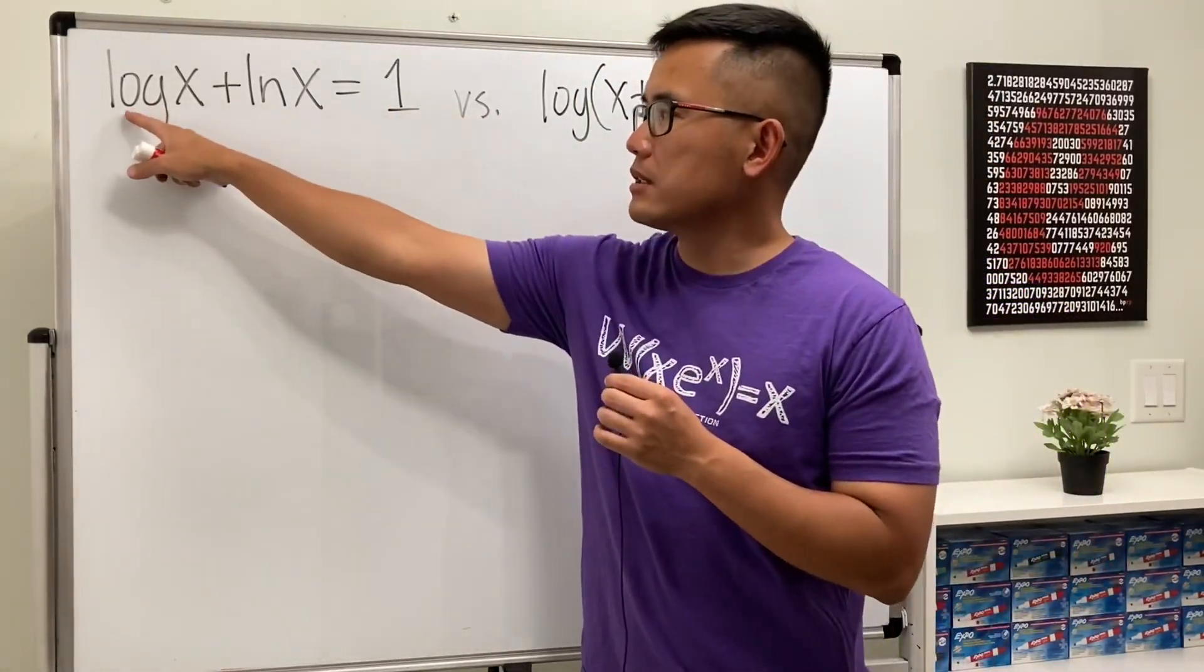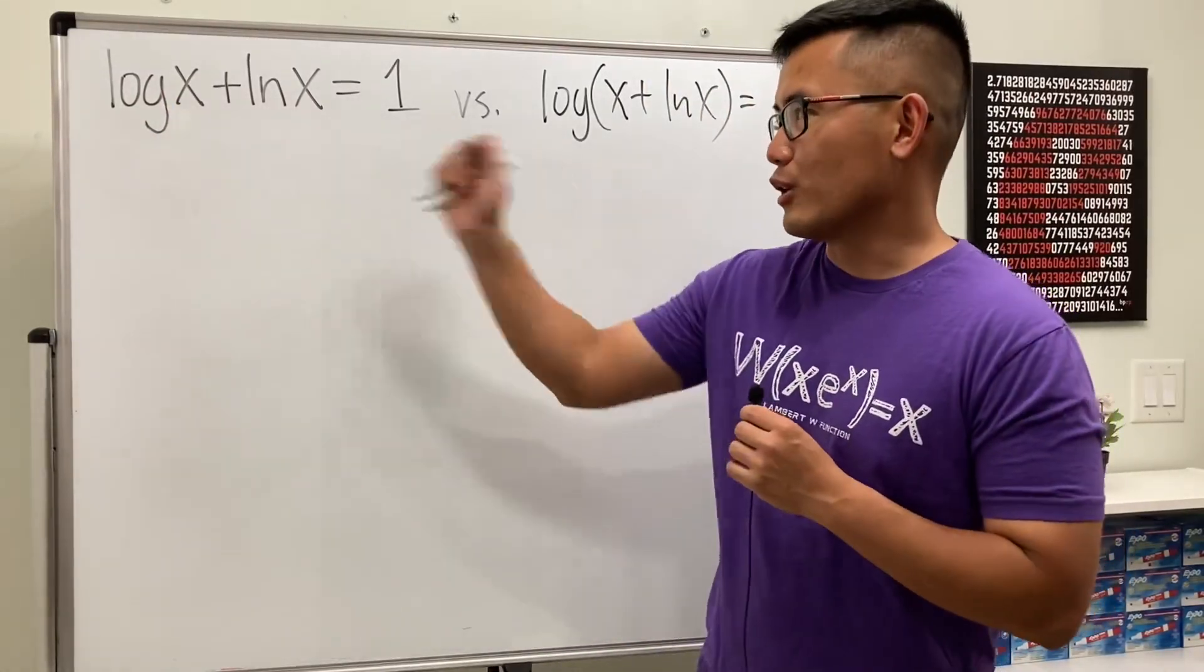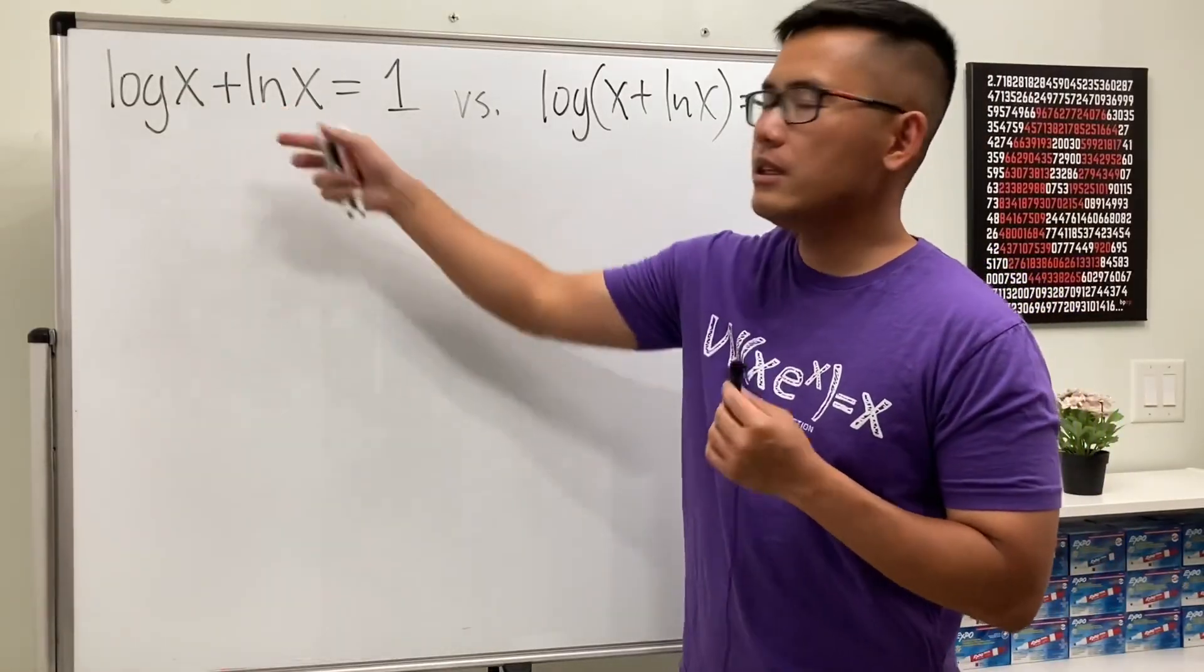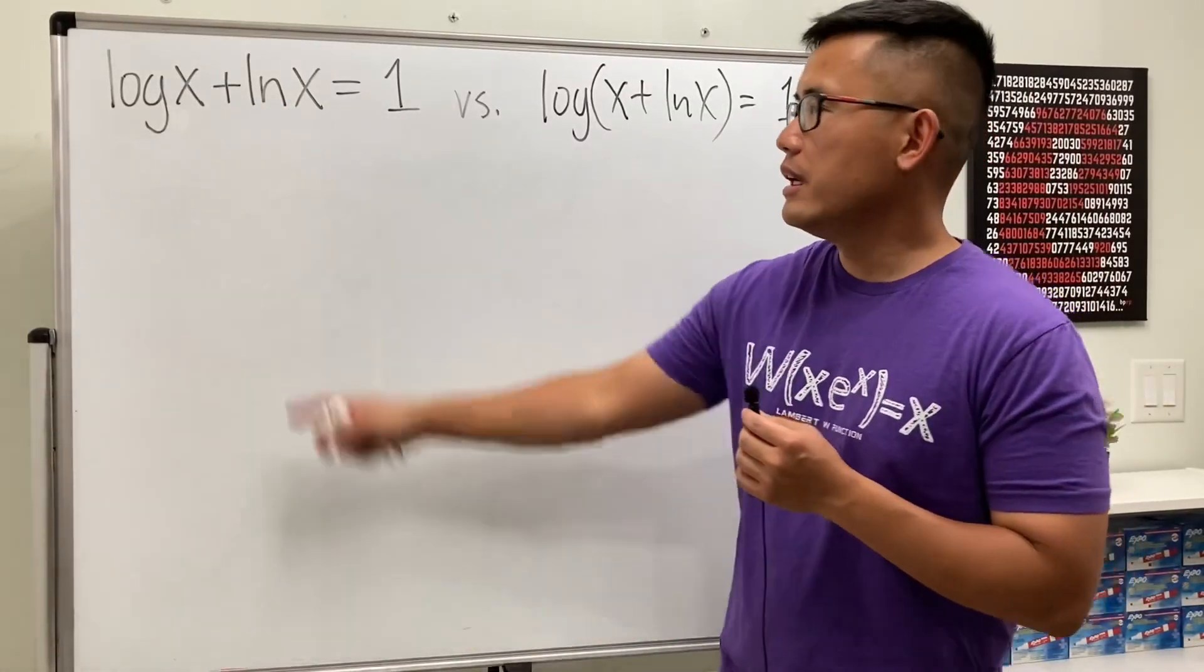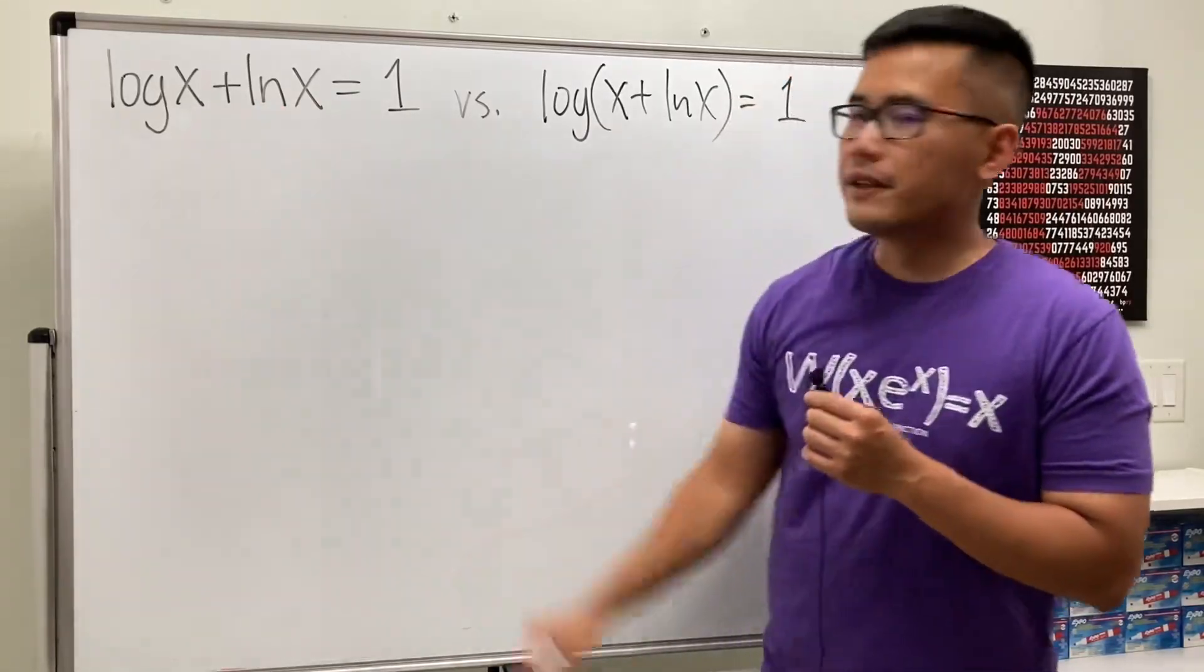And this log means log base 10, even though there's no number written, but it's commonly referred to as log base 10. And then for the ln, of course, it's the natural log, and that means log base e. So that's the first equation.